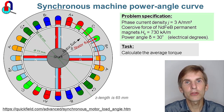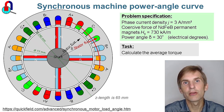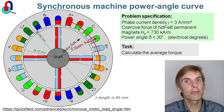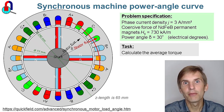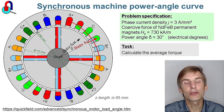In motors, the rotor lags the magnetic field. In generators, the rotor leads. Even if the power angle is a constant value, the torque is not, because of the slotted stator structure — the torque oscillates.